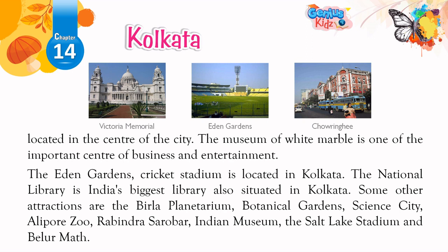The Eden Gardens Cricket Stadium is located in Kolkata. The National Library, India's biggest library, is also situated in Kolkata. Some other attractions are the Birla Planetarium, Botanical Gardens, Science City, Alipore Zoo, Rabindra Sarovar, Indian Museum, the Salt Lake Stadium and Belur Math.